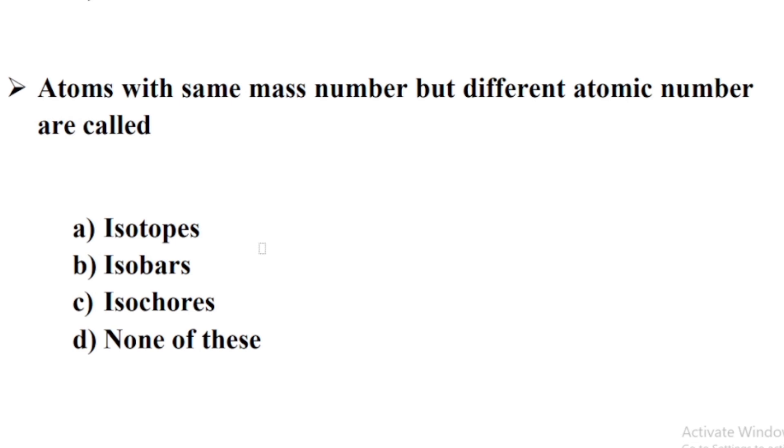Atoms with the same mass number but different atomic number are called — Option B: Isobars.